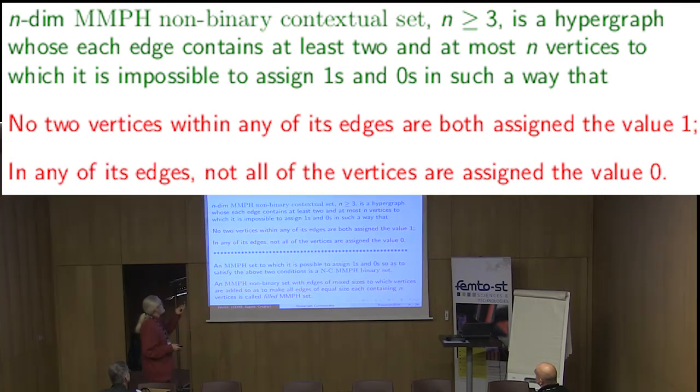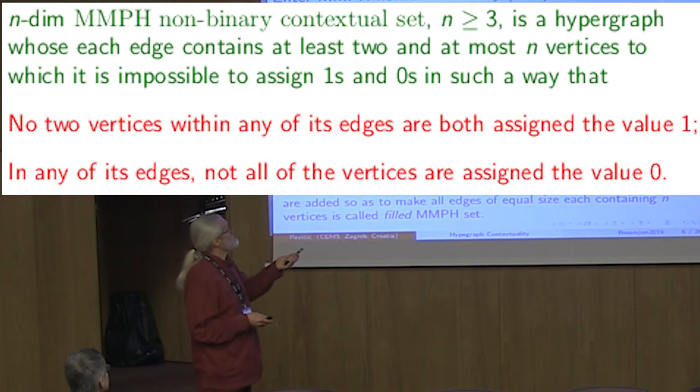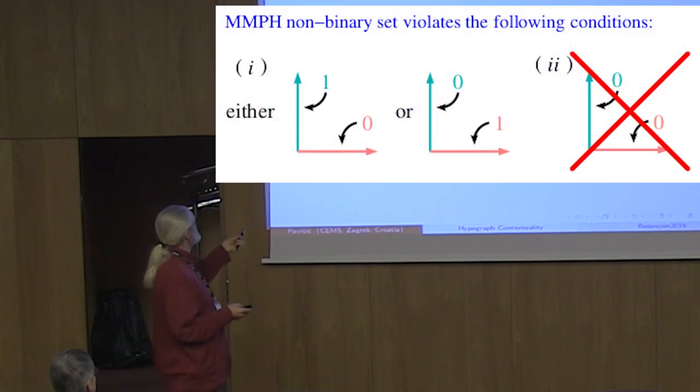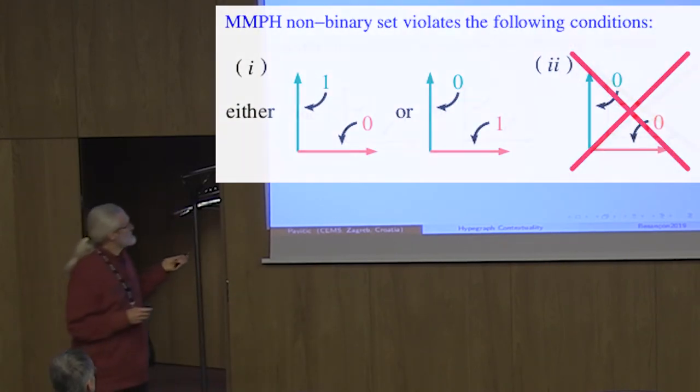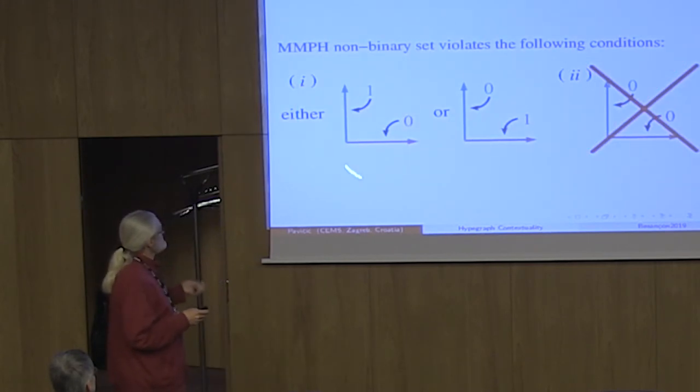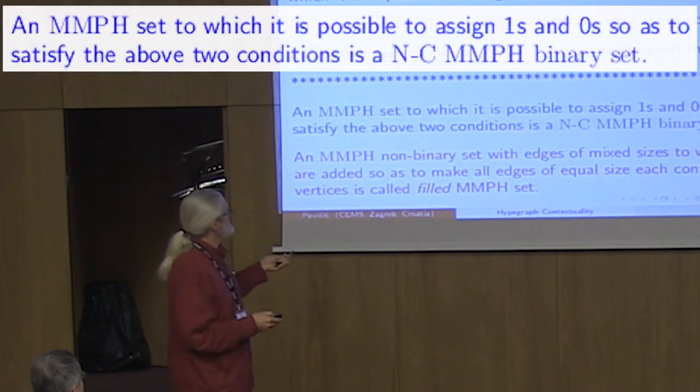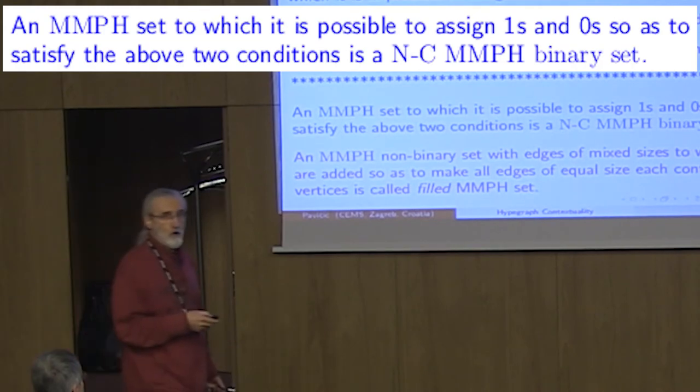We generated successfully the Peres class of hypergraphs and hit the computational barrier with systems with 24 vertices and 24 edges. How did we find the particular known sets? By filtering all those obtained general hypergraphs to become first MMP edges, and then to assign to them vectors and get Kochen-Specker vectors out of them. MMP edge can be endowed with the property of contextuality versus non-contextuality. Here we have a general definition: an n-dimensional MMP non-binary contextual set, with n ≥ 3, is a hypergraph whose each edge contains at least two and at most n vertices, to which it is impossible to assign ones and zeros such that no two vertices within any of its edges are both assigned the value 1, and in any of its edges not all of the vertices are assigned the value 0.